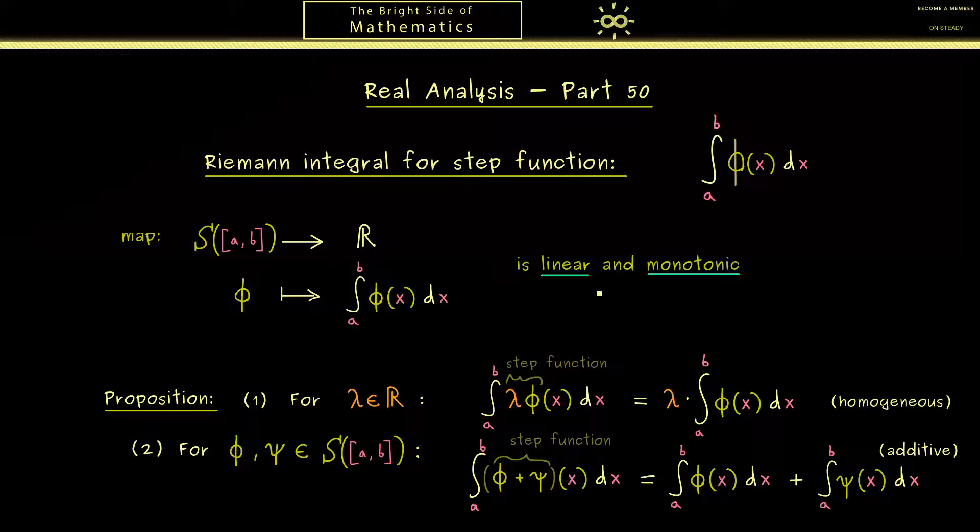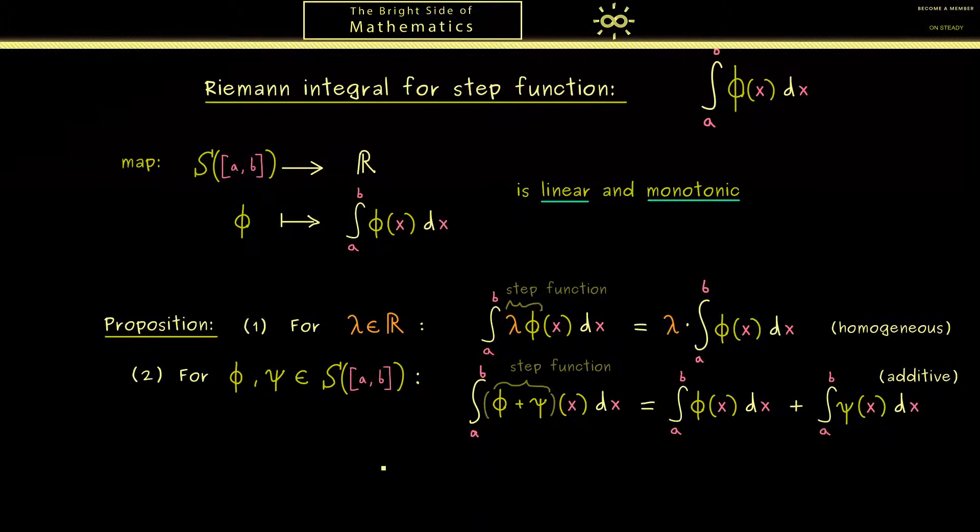Hence now only the monotonic property is missing here. Indeed this property is not so complicated and we formulate it again with two step functions phi and psi. So now we assume that one step function is always above the other one. So psi is always bigger or equal than phi. So this should mean that the orientated area of the rectangles is always larger for psi.